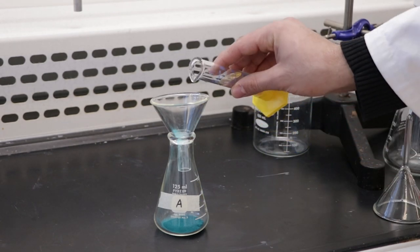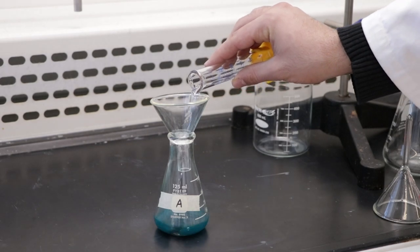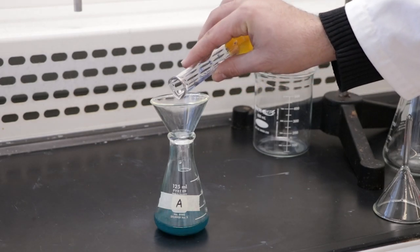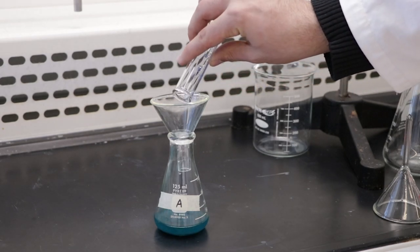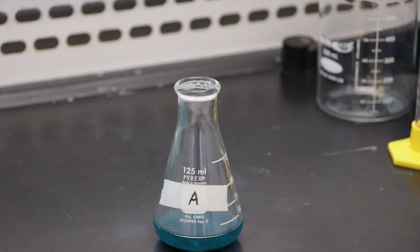Next, using a measuring cylinder, add 20 mL of distilled water to flask A. Wash down any solid adhering to the funnel with the distilled water before removing the funnel from the flask. Then place a glass rod in the flask.